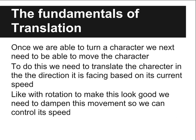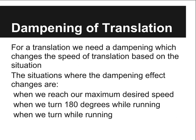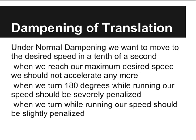Now that we can turn the character, we need to translate the character based on its current speed. Dampening can be used to control the character's speed, though there are more conditions we need to account for. The first condition is that we want to have the character accelerate to a full run in a tenth of a second, at which point we should reach our maximum speed so acceleration should stop. When we turn, we should add a speed penalty based on the severity of the turn.